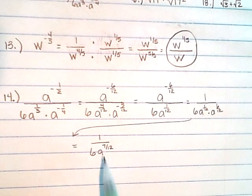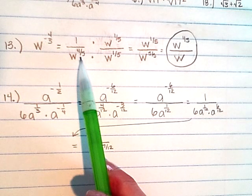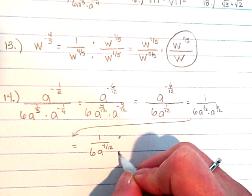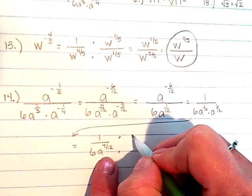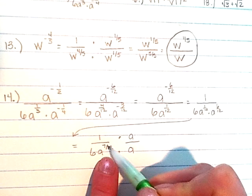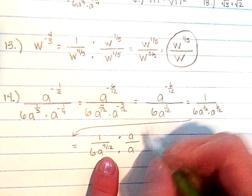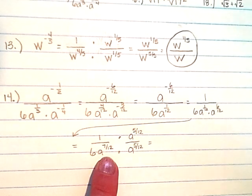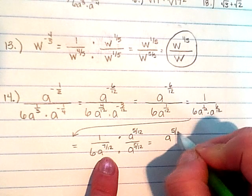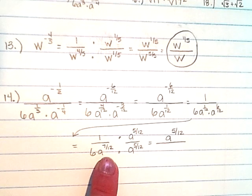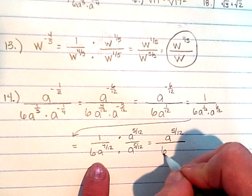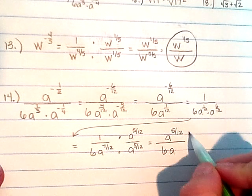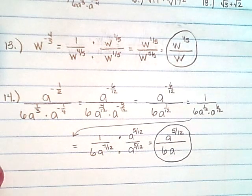Just like the last problem, I can't have that radical in the denominator. That 7-twelfths gives me a 12th root, so I'm going to have to rationalize again. I'll multiply the top and the bottom — I need 5 more to make a complete set — by a to the 5-twelfths power. That gives me a to the 5-twelfths on top, and on the bottom 6 times a to the 12-twelfths, which simplifies to just a to the first power. That's our simplified version.